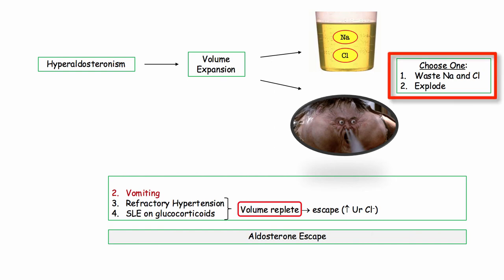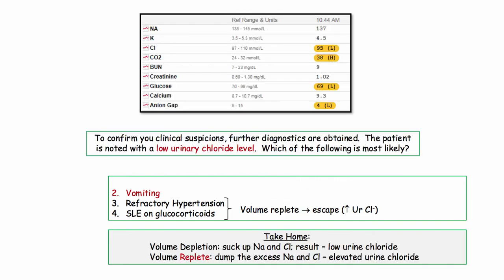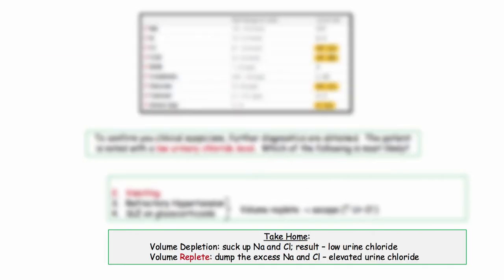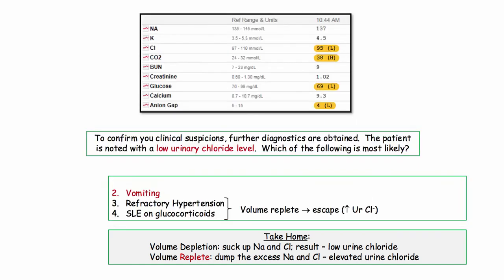Patients with hyperaldosteronism would literally blow up and explode if a homeostasis point wasn't achieved. At some point, the excess sodium and chloride will need to be excreted, and that will show up in the urine. So the take-home here is that volume depletion sucks up as much sodium and chloride as possible with a low urine chloride. If you are volume replete, as seen in mineralocorticoid excess, the body eventually dumps the excess chloride. As such, urine chloride is a useful tool in distinguishing the different causes of metabolic alkalosis.